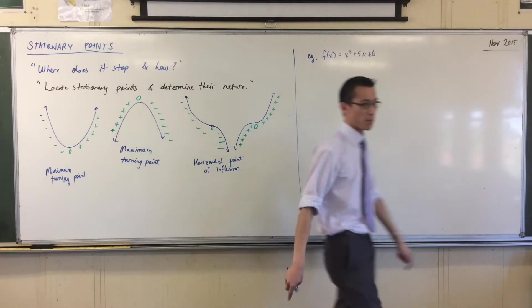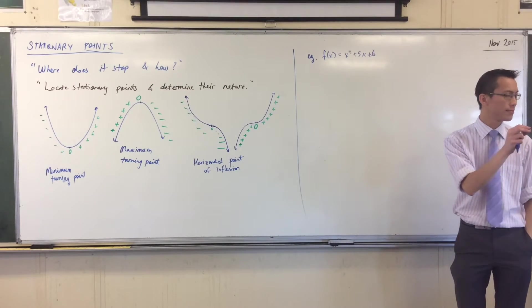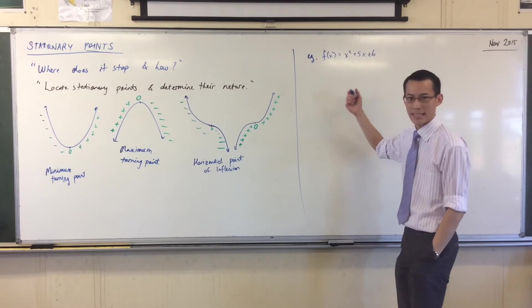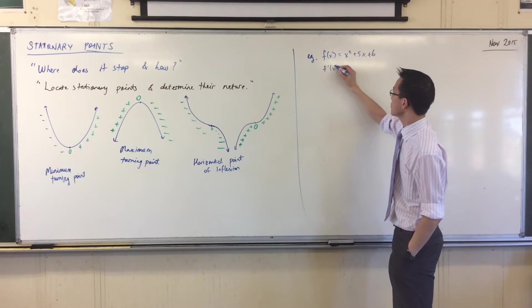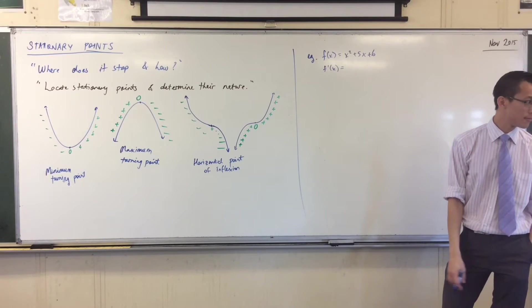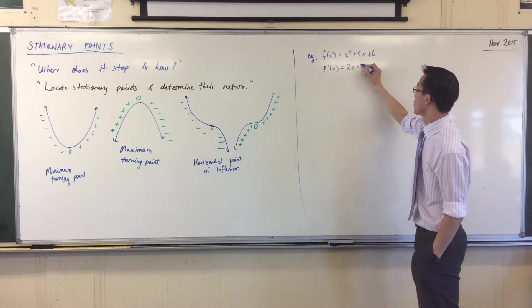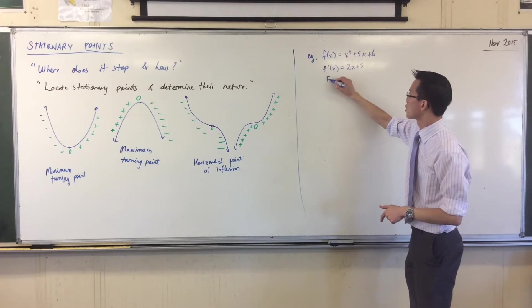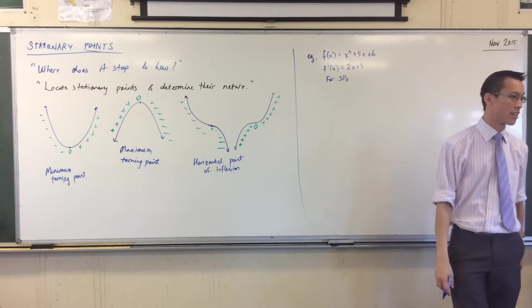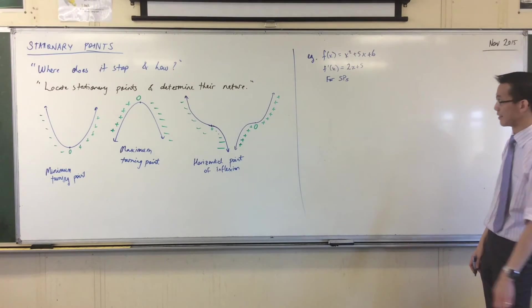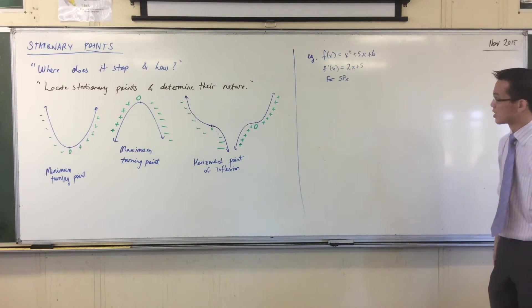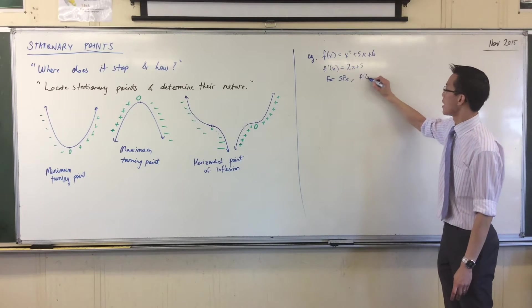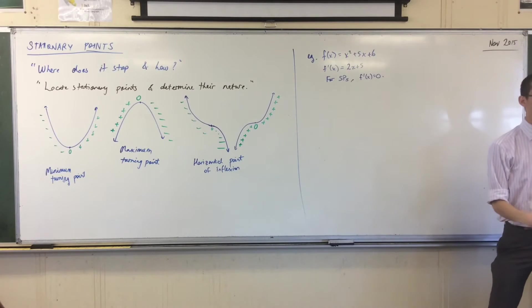If I said to you, locate the stationary points and determine their nature, here's the way I would do it. The stationary point by definition is where f dash, the derivative, is zero. Does that make sense? So first I better get f dash. What is f dash? 2x plus 5. Good. My next line: for stationary points, and I'm going to let you use the abbreviation SP.